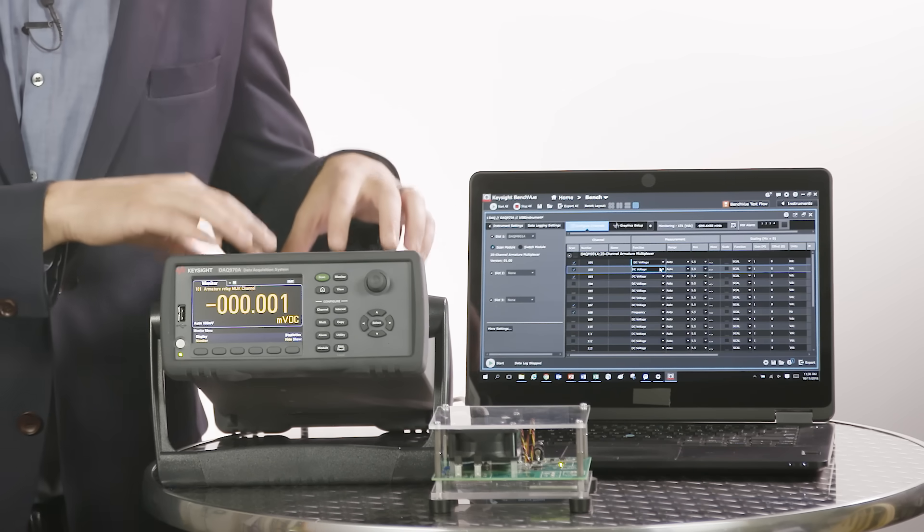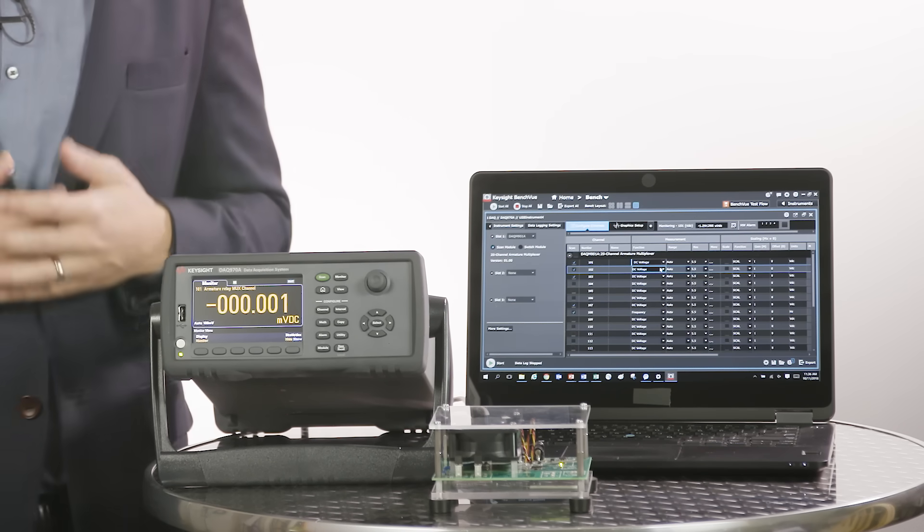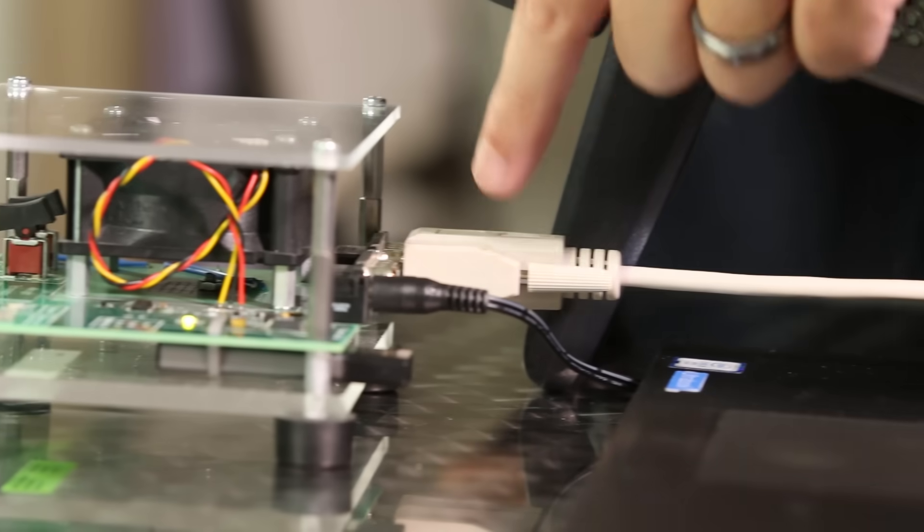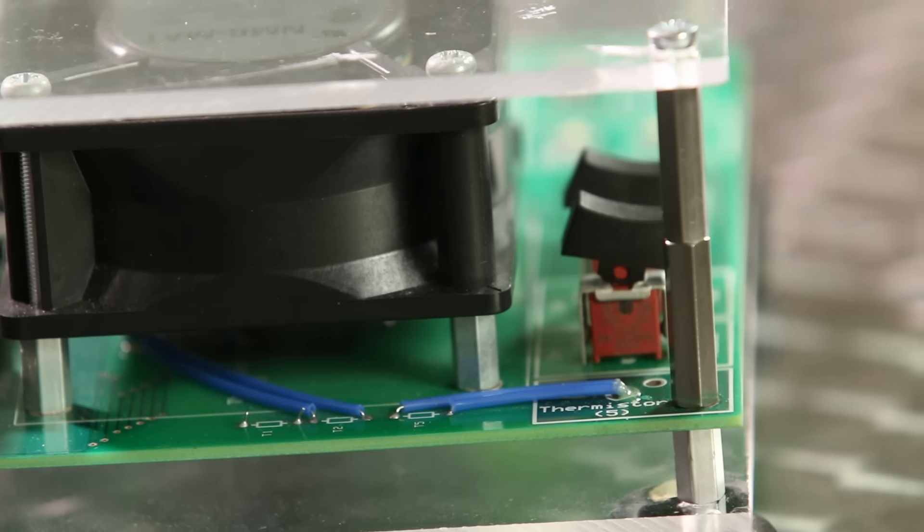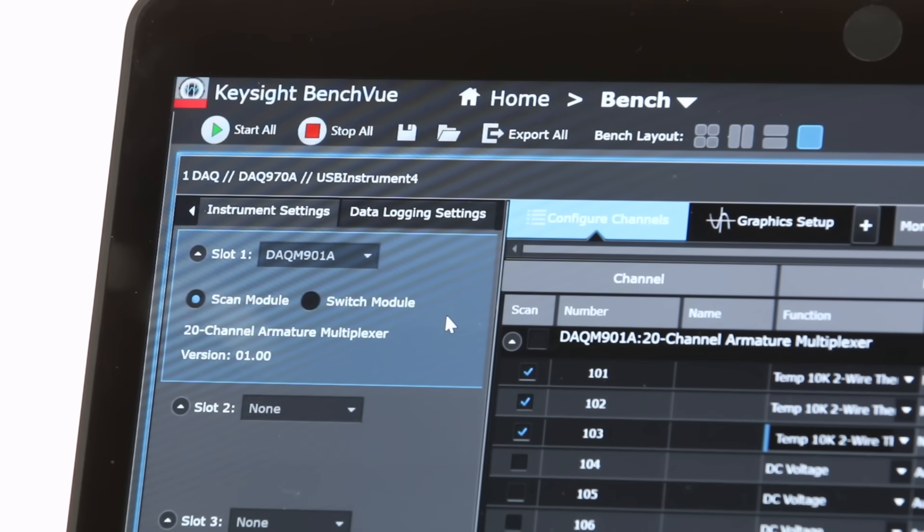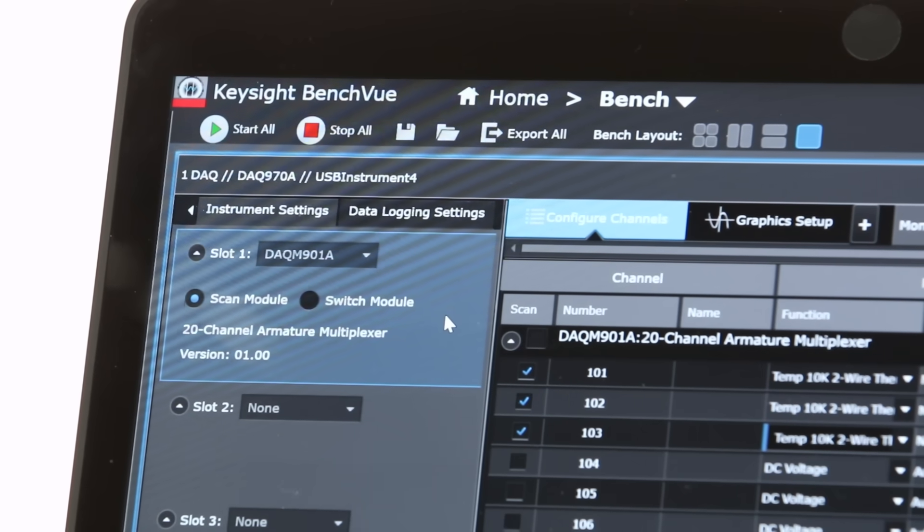We're using a DAC970A and a DACM901A multiplexer module. The DAC is wired to the temperature cube and can measure the temperature with its built-in thermistor temperature sensors. We're also using a USB cable to connect the DAC to my laptop and using the BenchVue DAC software to control it.